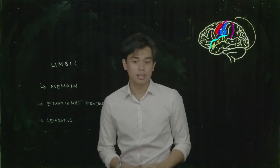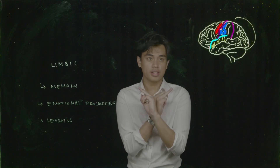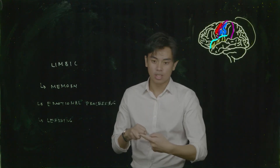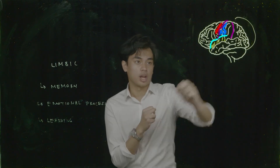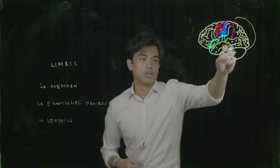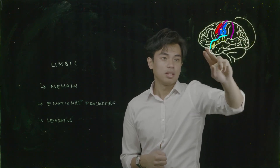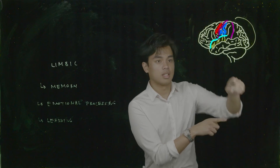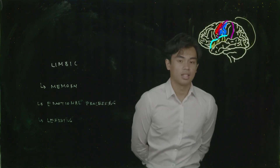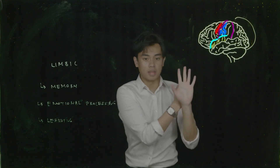To recount: we have our front two fingers representing our frontal lobe, the precentral gyrus represented in red, the central sulcus, the postcentral gyrus represented in blue, the parieto-occipital sulcus, the occipital lobe, then the lateral sulcus, and our temporal lobe with the superior temporal gyrus. Then we have our insula and our limbic lobe.